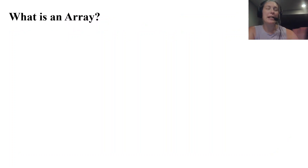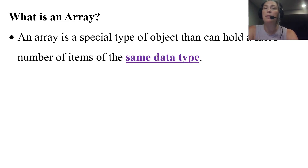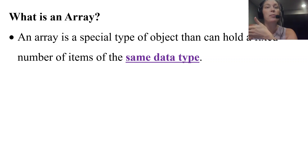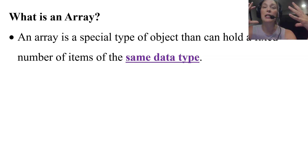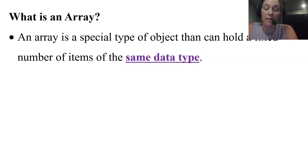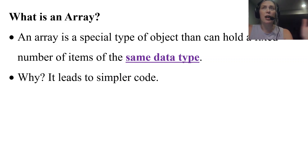What is an array? You might have seen this before in other coding classes. An array is a special type of object in Java that can hold a fixed number of items of the same data type. It's a special type of data structure — it can hold a fixed number of items, and they all have to be the same data type.